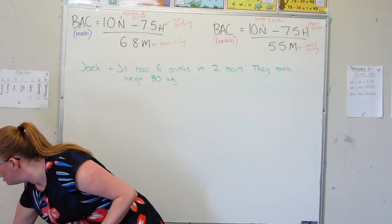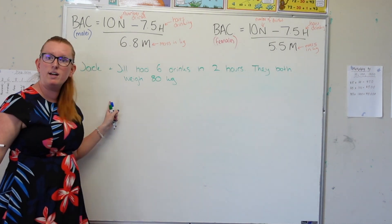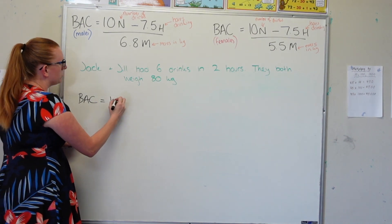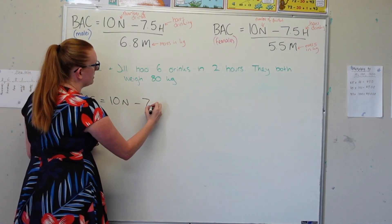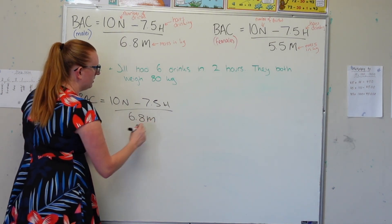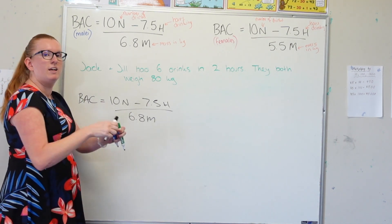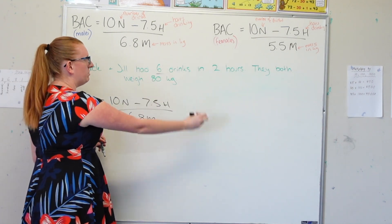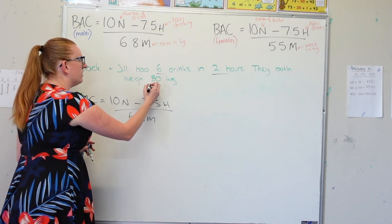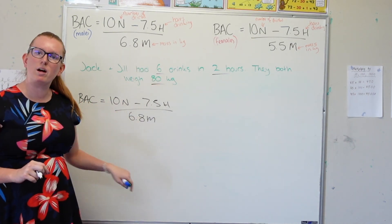I am going to start by rewriting my formula because I always do that. It's always good to rewrite your formula. So blood alcohol concentration is equal to 10N minus 7.5H over 6.8M. In our question, it gives us N being the number of drinks that Jack had, the H is the number of hours that he was drinking, and the M is how much he weighs. So we're going to sub these three values into our formula.